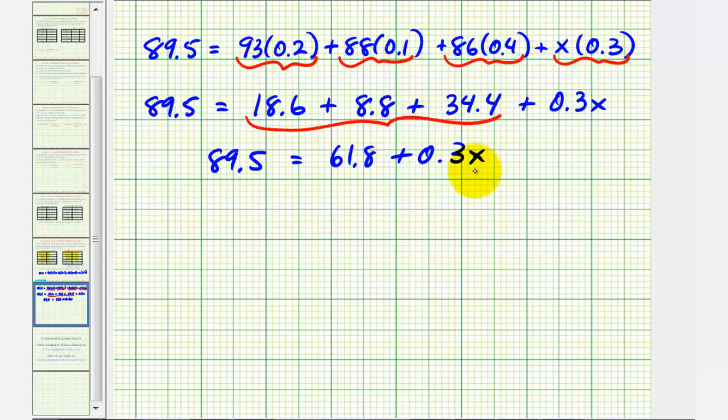Now we're down to a basic two-step equation. So we'll subtract 61.8 on both sides. This difference is 27.7.